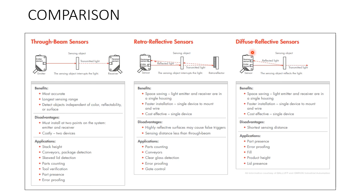The diffuse sensor has the least cost as a single device, but its range is very short compared to through beam sensors which have a very long range. Disadvantages: through beam sensors must be installed precisely and cost is higher. Retro reflective sensors may give false triggers on highly reflective surfaces and have less range. Diffuse sensors have the shortest sensing distance, are affected by surrounding ambient light, and can produce false results.